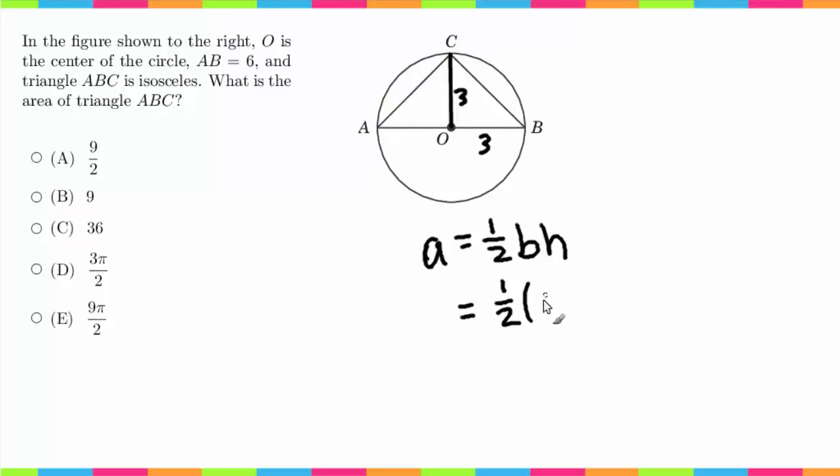is 6, and the height, which is from here to here, is 3. So now what we have to do is 6 times one half is 3 times 3, which equals 9. So our answer would be answer choice B.